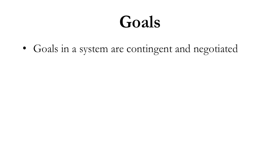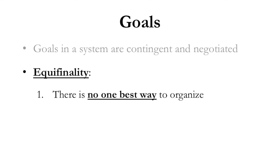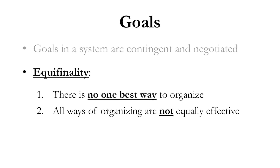Systems also have goals, but those goals are not like classical management goals of finding the one best way. Goals are contingent and negotiated — it depends on what the organization is facing, and it will have to adapt along the way as the situation develops. Equifinality is a powerful concept describing how systems people approach goals. The first part is that there's no one best way to organize, which flies directly in the face of Frederick Taylor. The second, more powerful part is that all ways of organizing are not equally effective — some ways are better than others, you just can't always know ahead of time which several good ways those are.